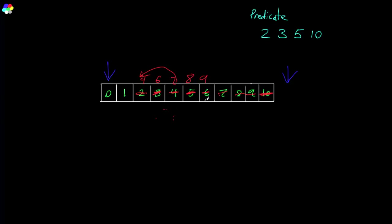The return value for remove_if is going to be an iterator to the new end of the container — or alternatively, an iterator to the garbage section of the container. Because this stuff here is all detritus, it's all garbage. It doesn't mean anything anymore. If it were strings, it would all be empty husks. If it were ints, it would be garbage values because they've been moved from, or they were part of the deletion targets. Either way, you get this iterator.